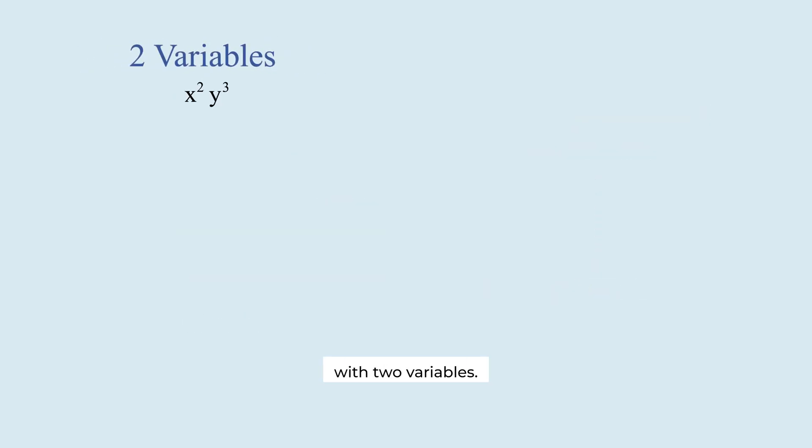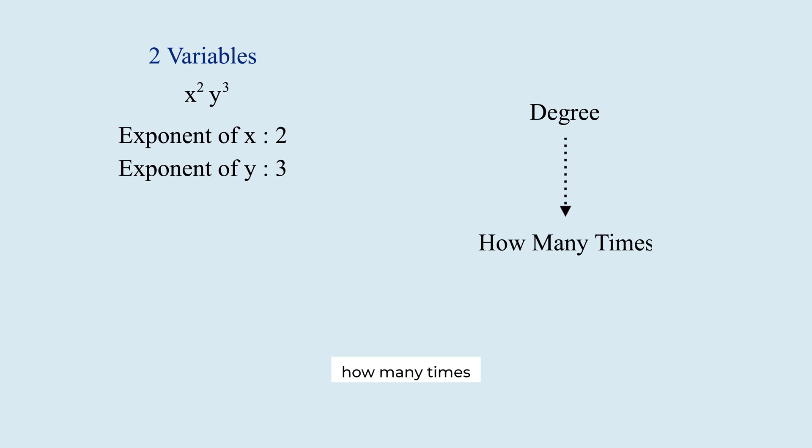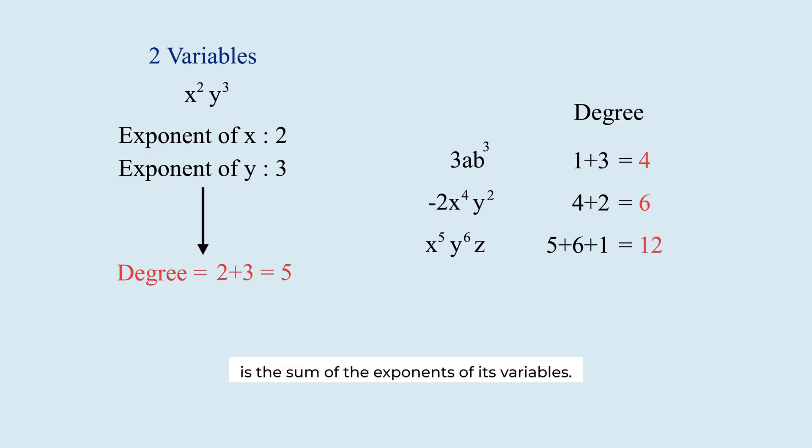This is a monomial with two variables. The exponent of x is 2. The exponent of y is 3. The degree means how many times the variables are multiplied. So the degree is their sum, 2 plus 3. The degree of a monomial in several variables is the sum of the exponents of its variables.